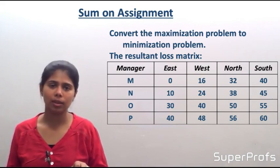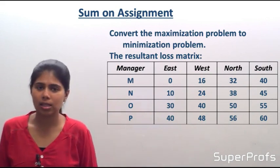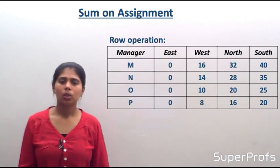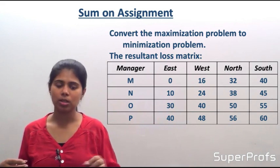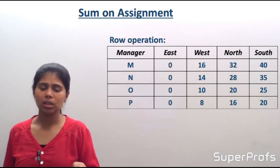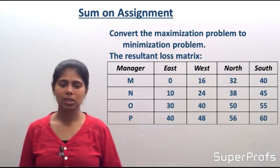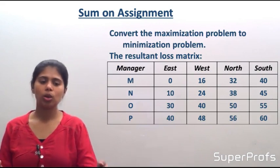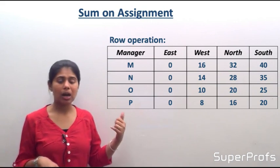Next we check whether data is balanced. M equals 4 zones and N equals 4 managers, so 4=4 — data is balanced. We proceed with row operations: subtract the smallest number in each row from all elements in that row. In the first row the smallest is 0, so values remain 0, 16, 32, 40. In the second row the smallest is 10, so we get 0, 14, 28, 35. For rows O and P, the smallest numbers are 30 and 40 respectively, deducted accordingly.